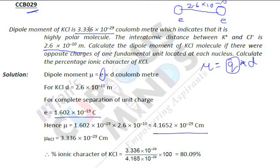The dipole moment we have given is 3.336 × 10⁻²⁹. We have to find the ionic character percentage. Ionic character will be the experimental value upon calculated value, and that ratio will be multiplied by 100 to get the percent ionic character.